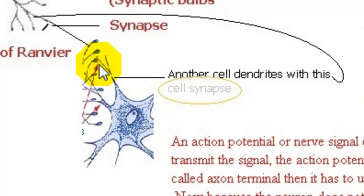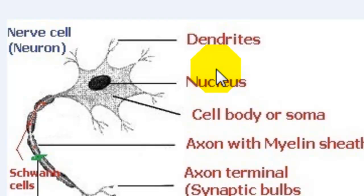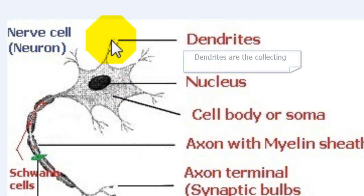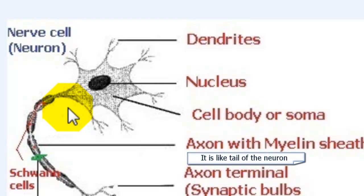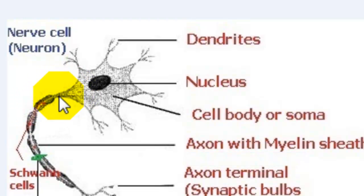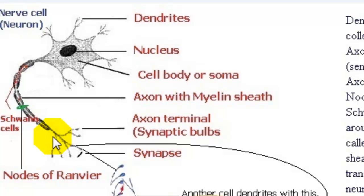So to review what we have just learned: we have the dendrites, which are the neuron's receiving side and considered the collecting fibers. The axon is like the tail of the neuron and ends with an axon terminal, the sending-out fibers. We have the axon hillock, the point where soma and axon meet. We have the nodes of Ranvier, the little spaces between the myelin sheath. We have the myelin sheath, formed of Schwann cells. We have the axon terminal and synaptic bulbs, and we have the synapses. These are the basic components of the neuron.